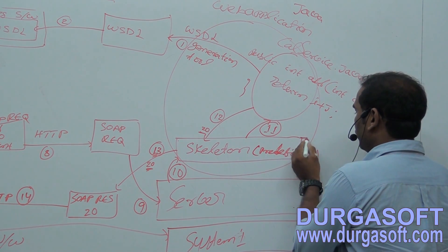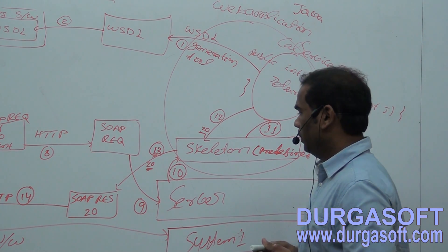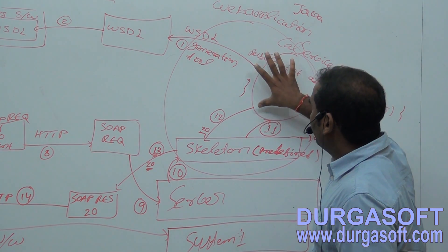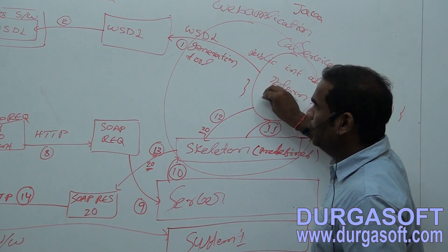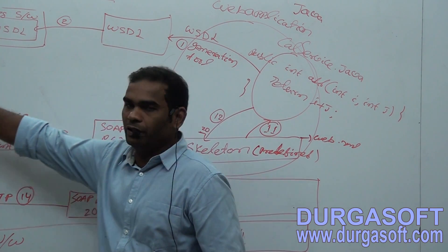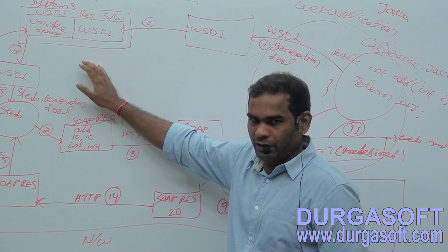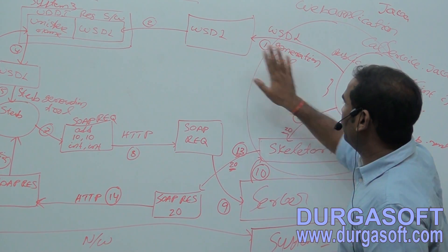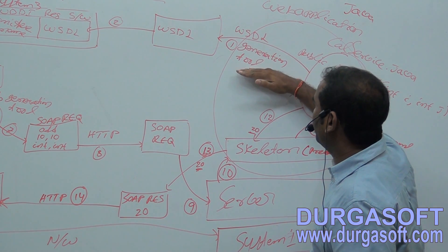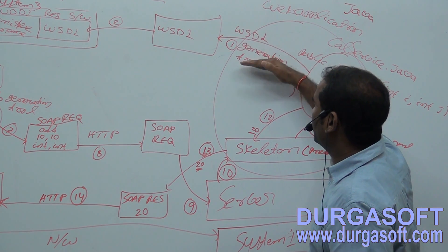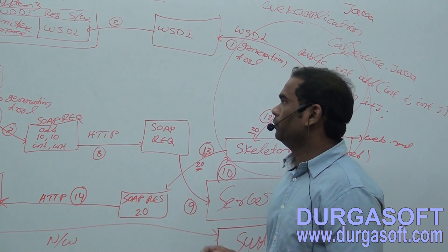This skeleton needs to be configured in the web.xml file. After creating and deploying this service class, we need to generate the WSDL file and share it with the client so the client can understand about your service. The service provider will use a WSDL generation tool to generate this WSDL file.